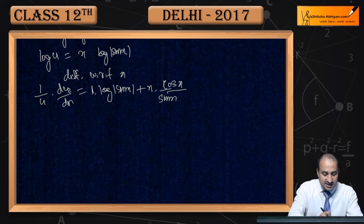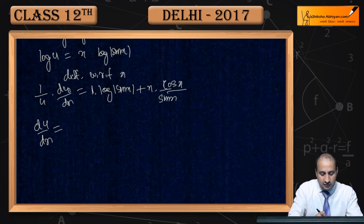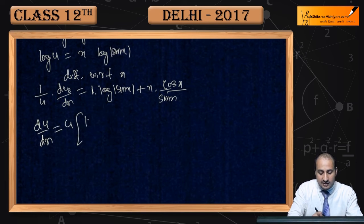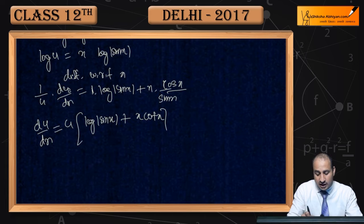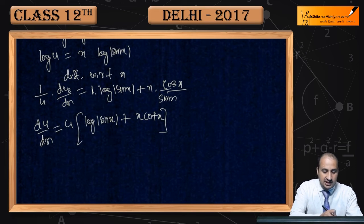To yahan se du/dx ki value jo aa rahi hai: du/dx = u · (log(sin x) + x · cos x / sin x). Aur cos x / sin x kya hota hai — cot x. To du/dx = sin(x)^x · (log(sin x) + x·cot x). Value put kar dijiyega.